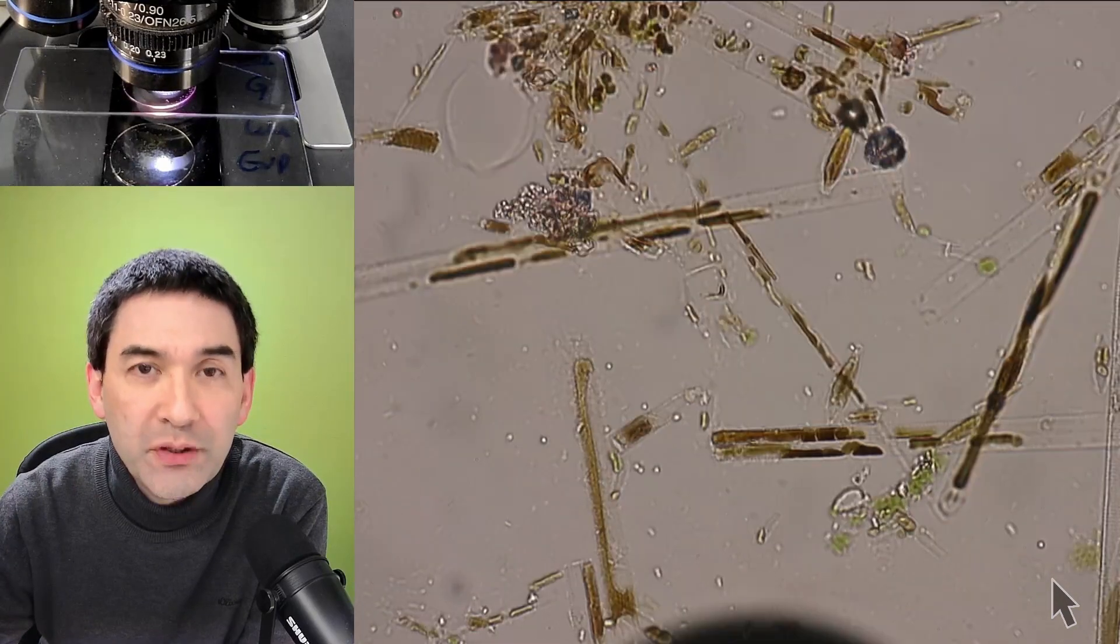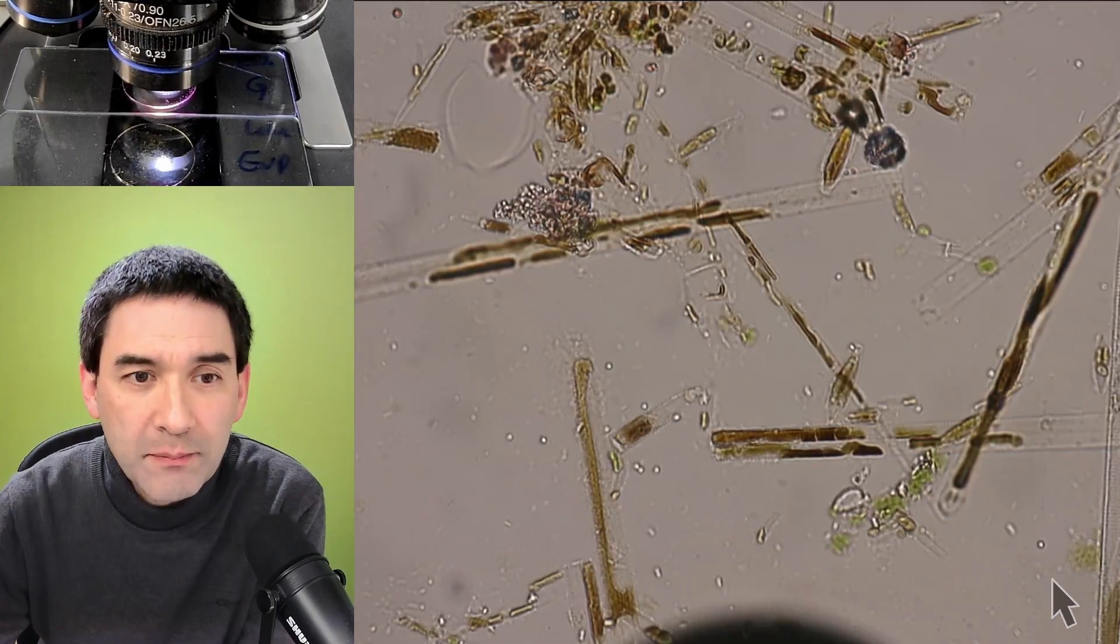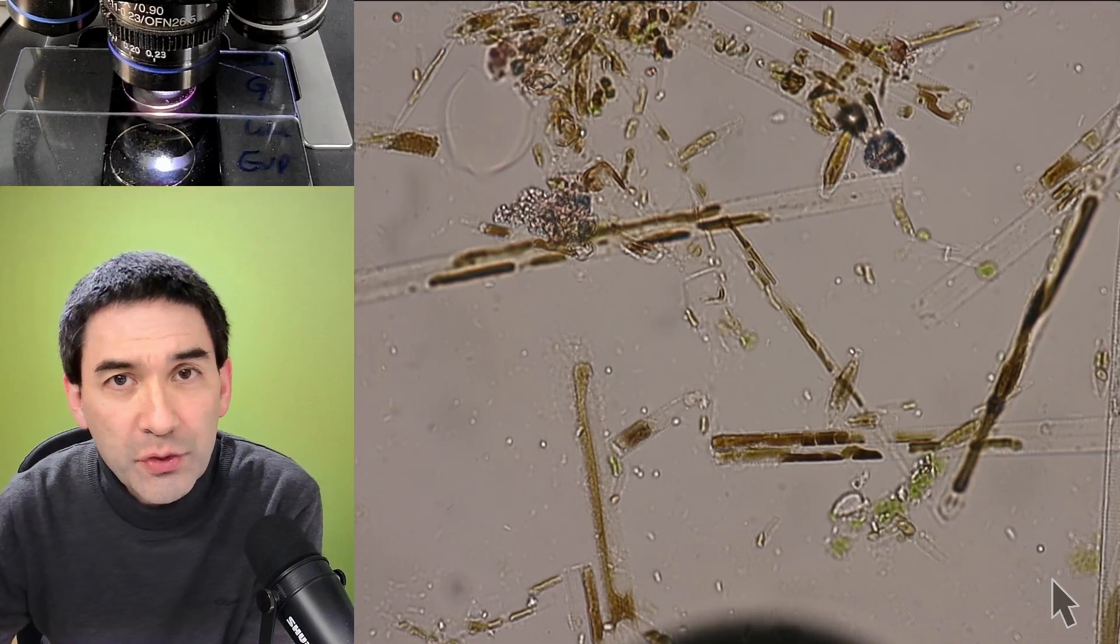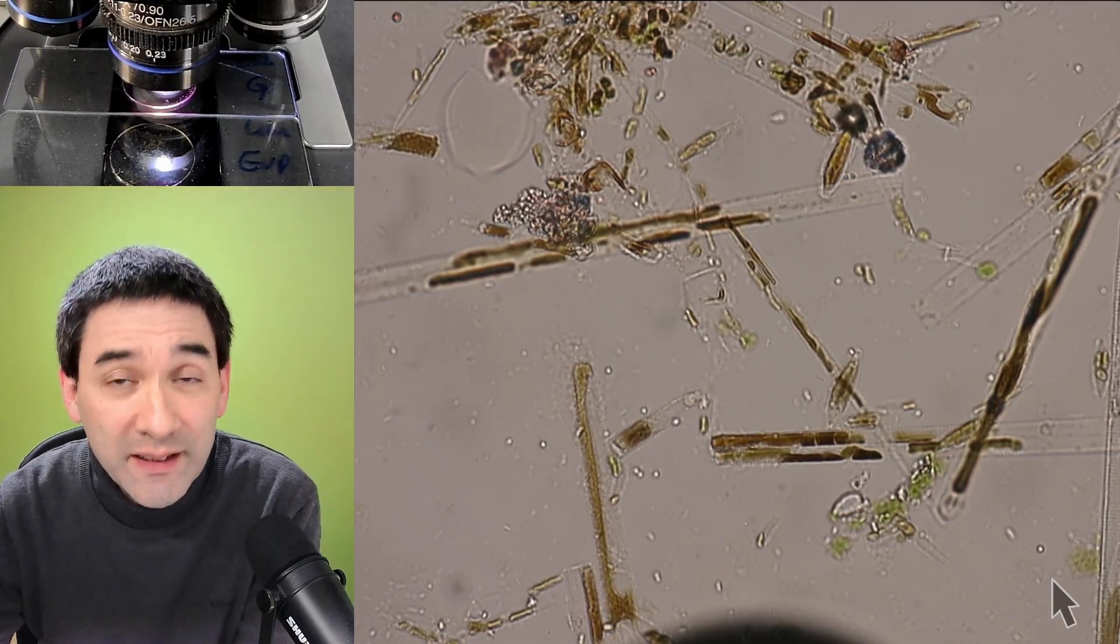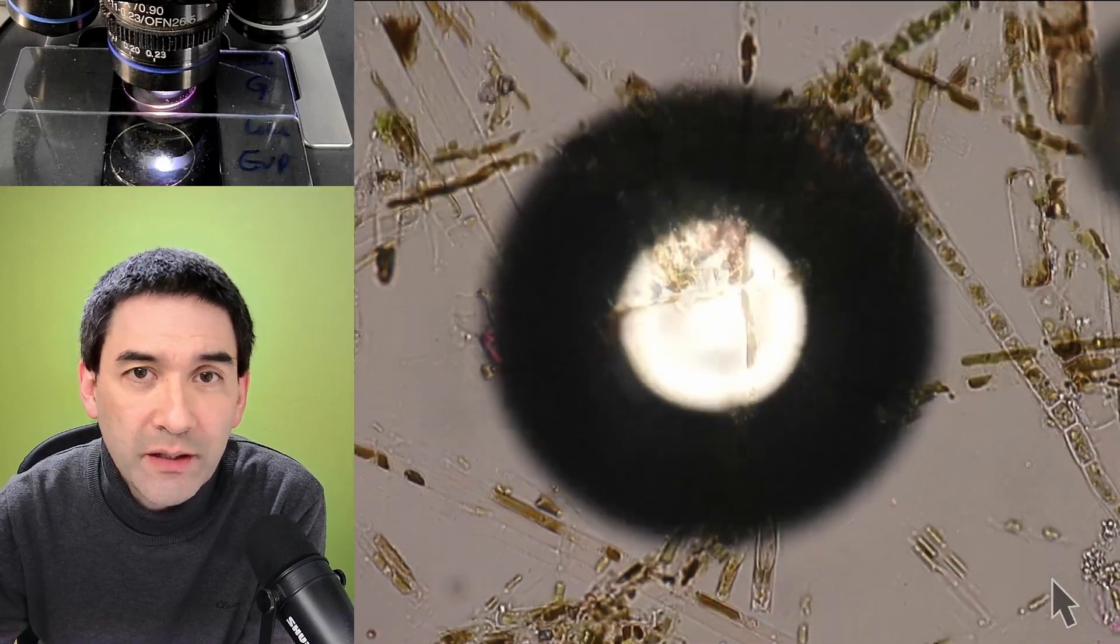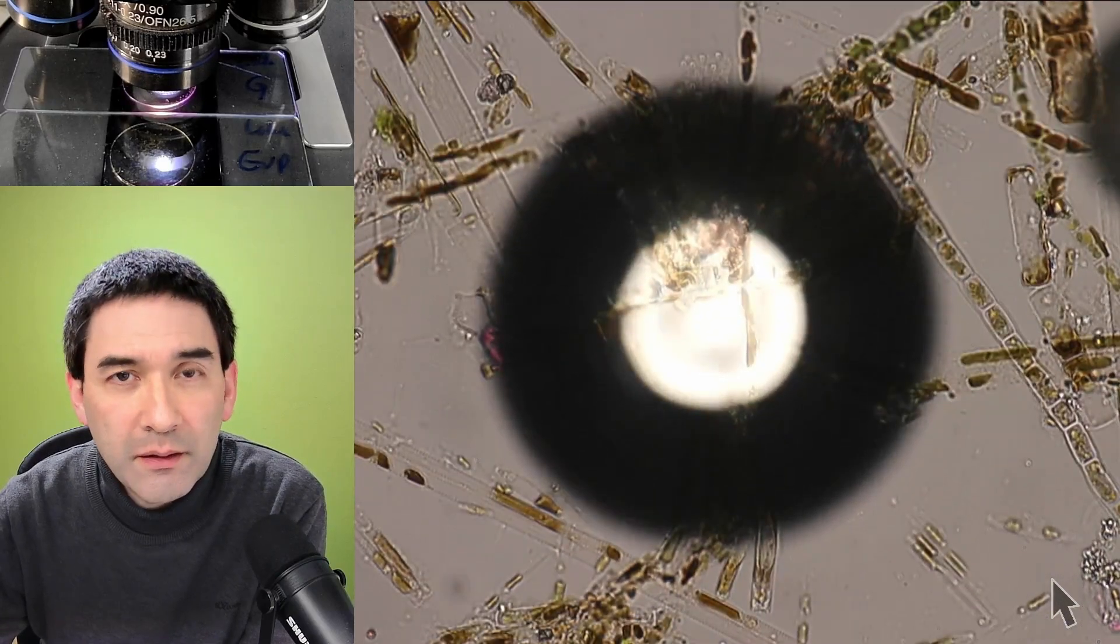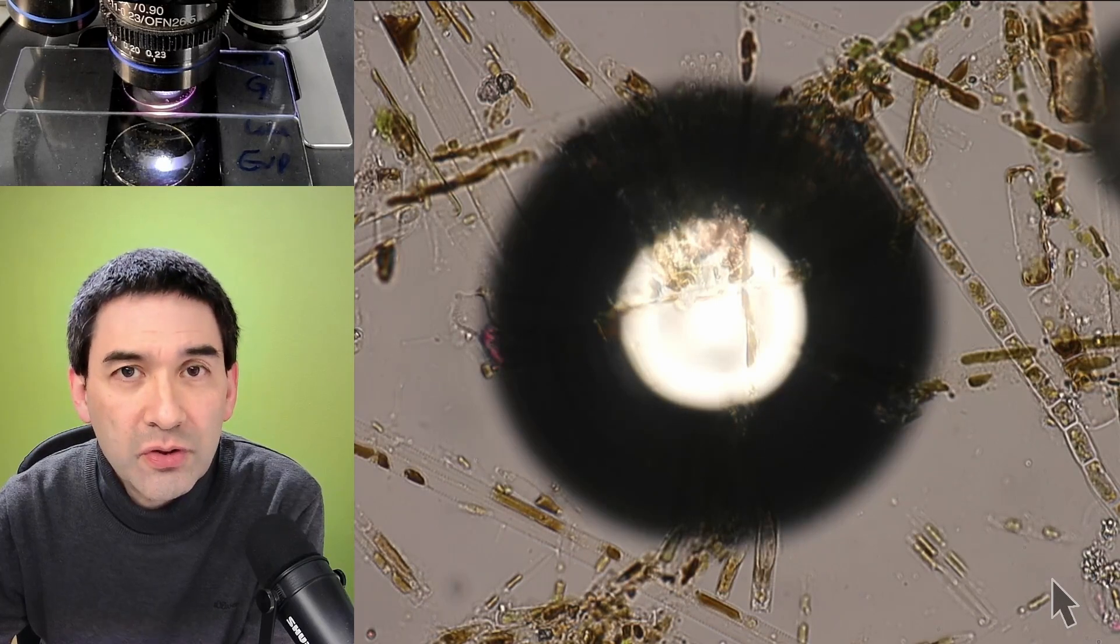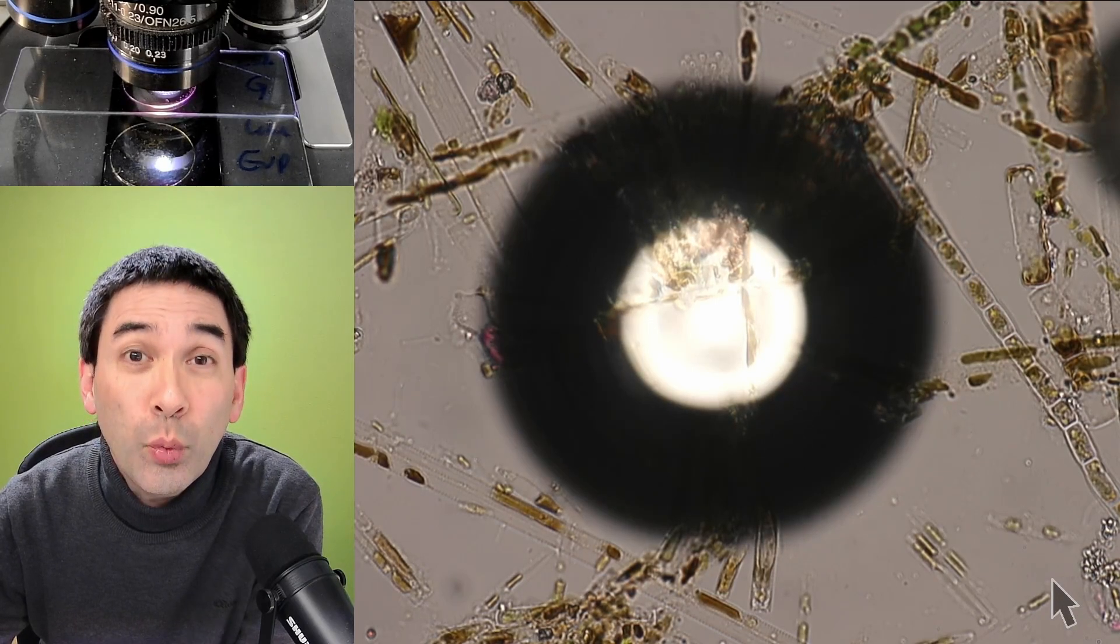Each of those mounting media also has its own advantages and disadvantages. One of the disadvantages of glycerin gelatin is what you see over here—the bubbles. It's difficult to use this mounting medium because you have to warm it up, so you have to melt the mounting medium, and then it becomes liquid. The bubbles start to appear, so you have to be kind of careful when making the permanent slide.